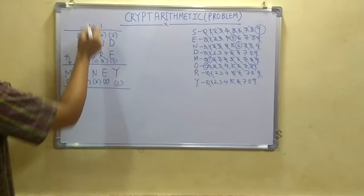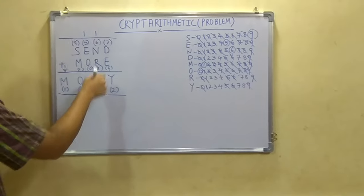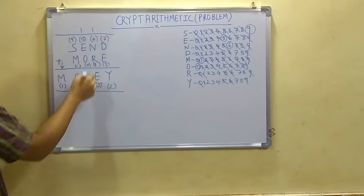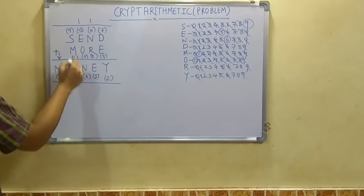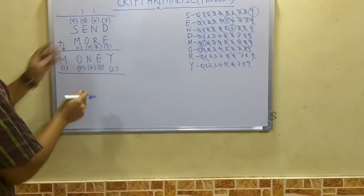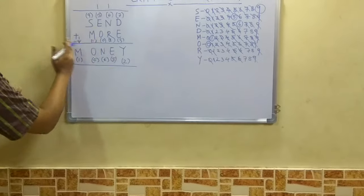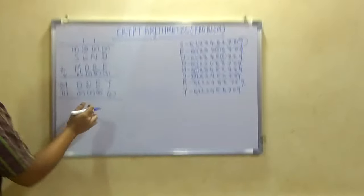7 plus 8 is 15. 15 plus 1 is, that is a carry will be there. 5 plus 1 is 6. So N is 6. And 9 plus 1 that is 10. Now this is separate. This we have done separately. And this is the main part. So I will draw a line here.